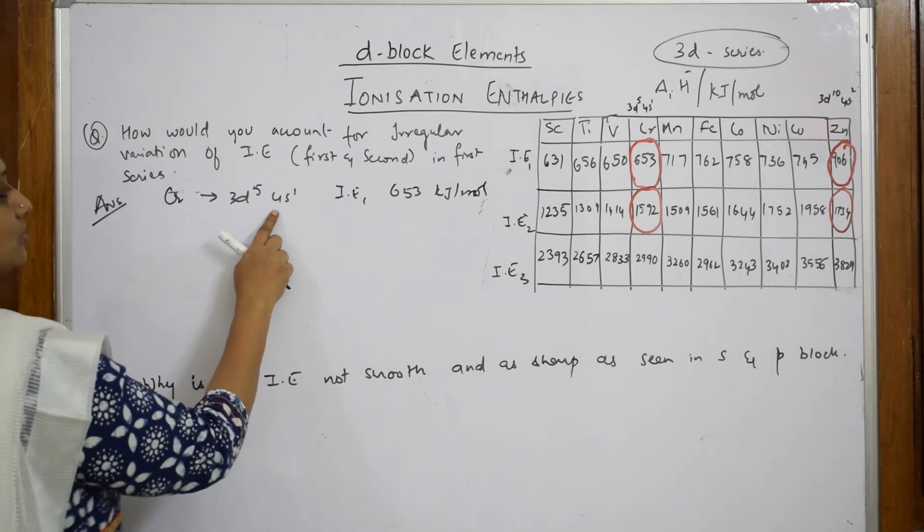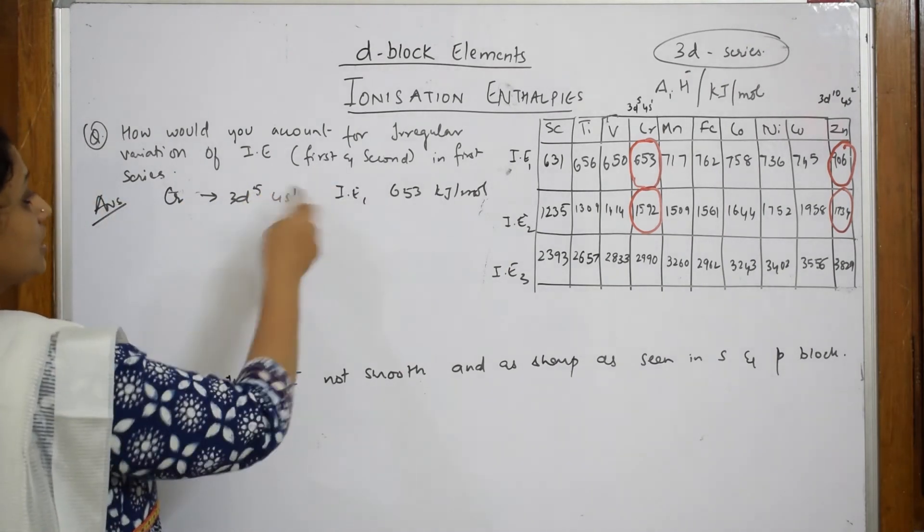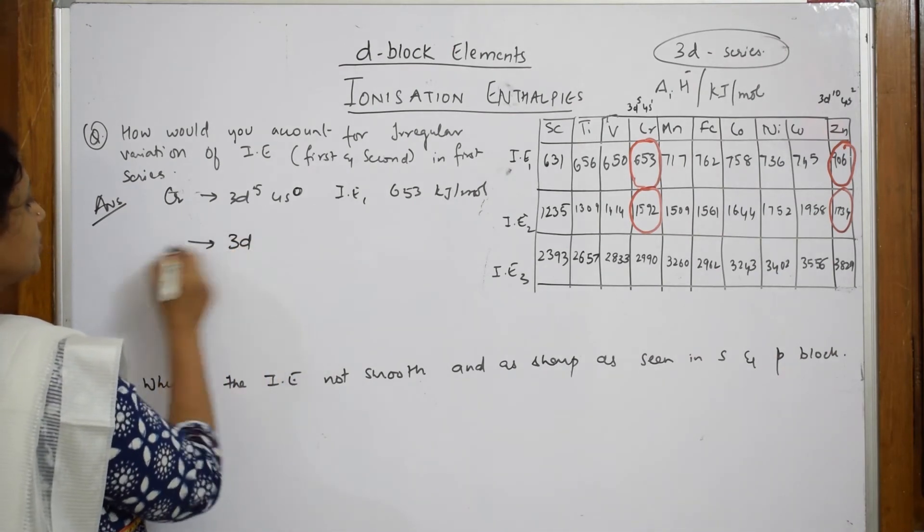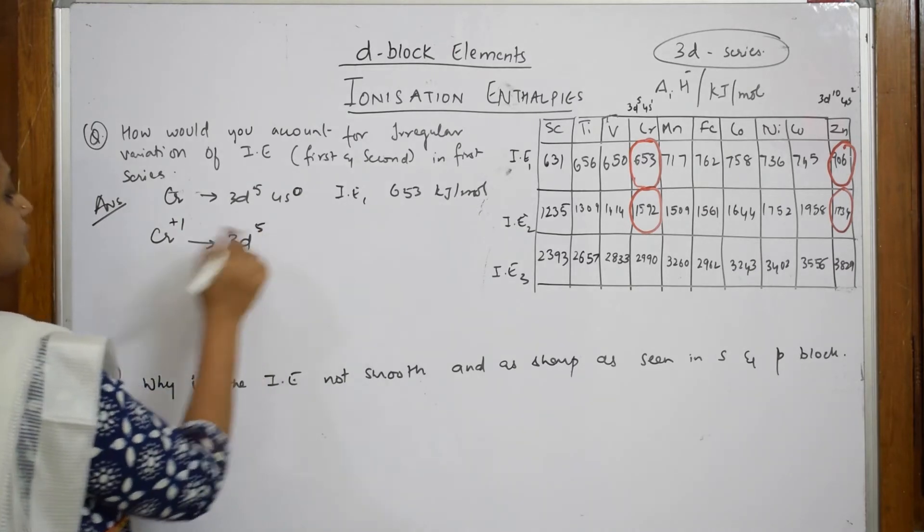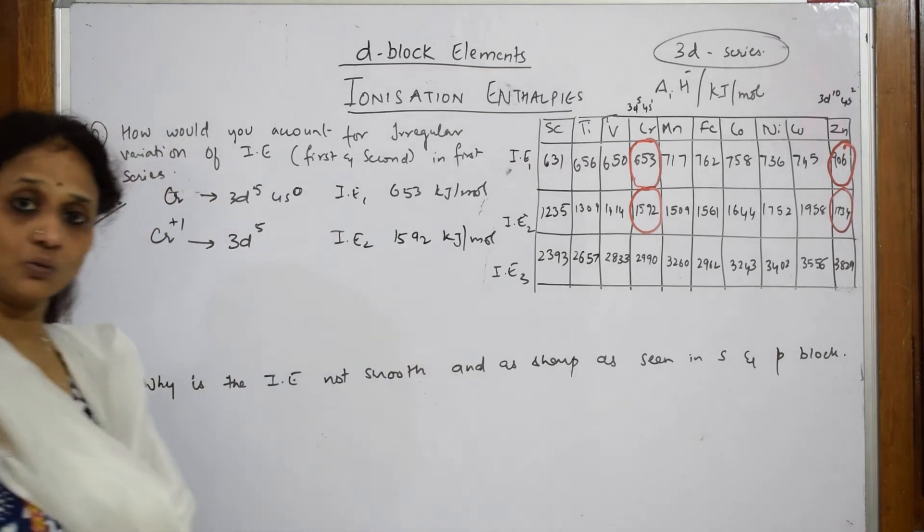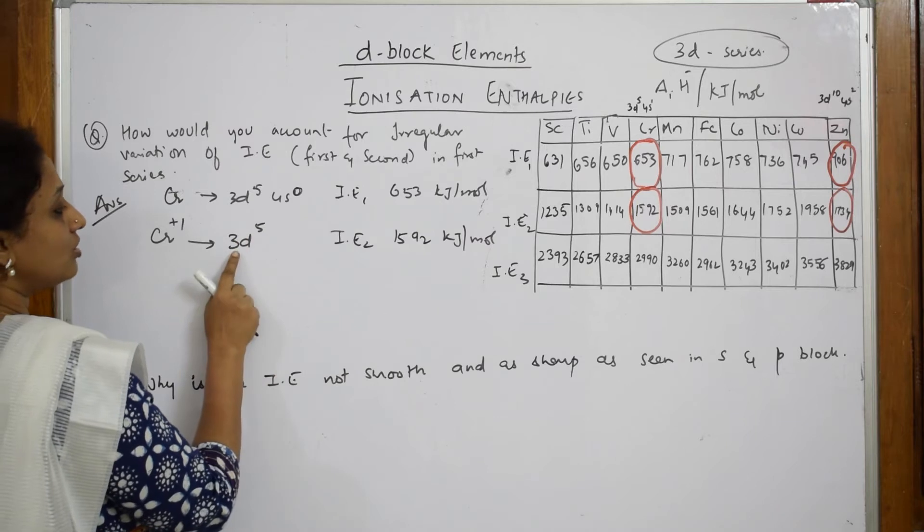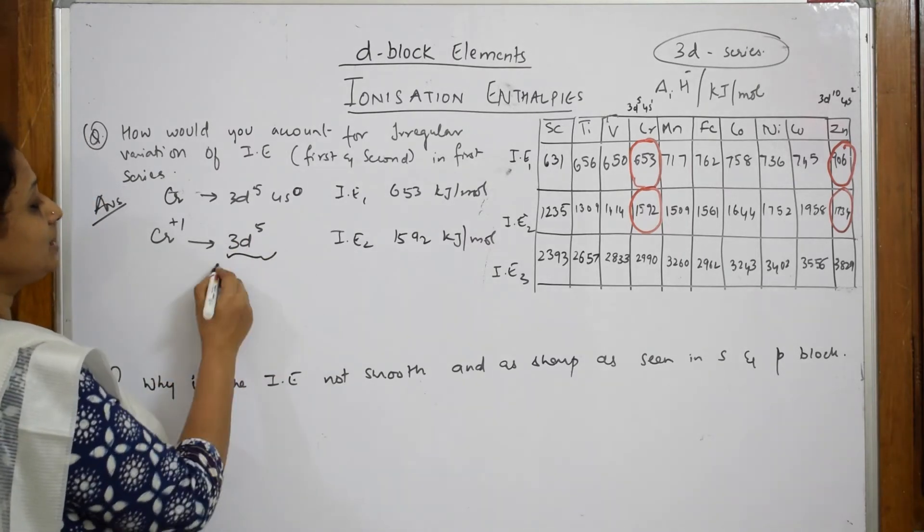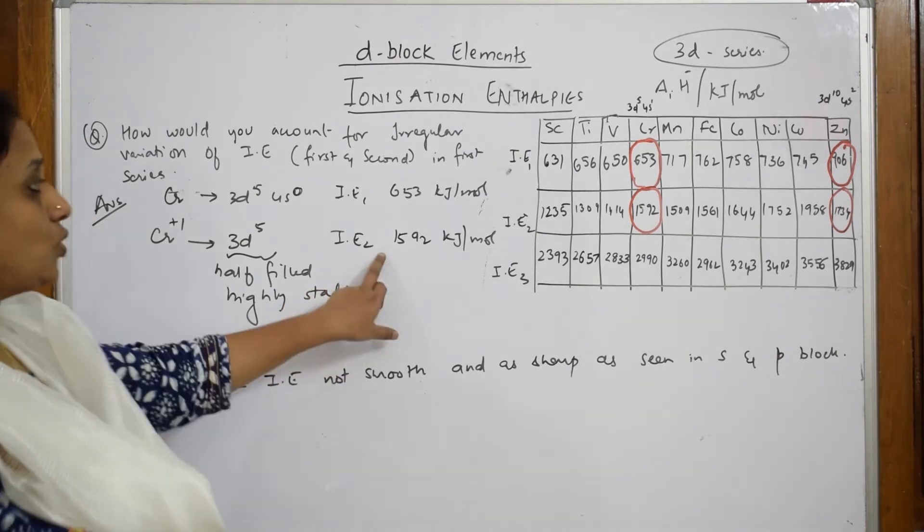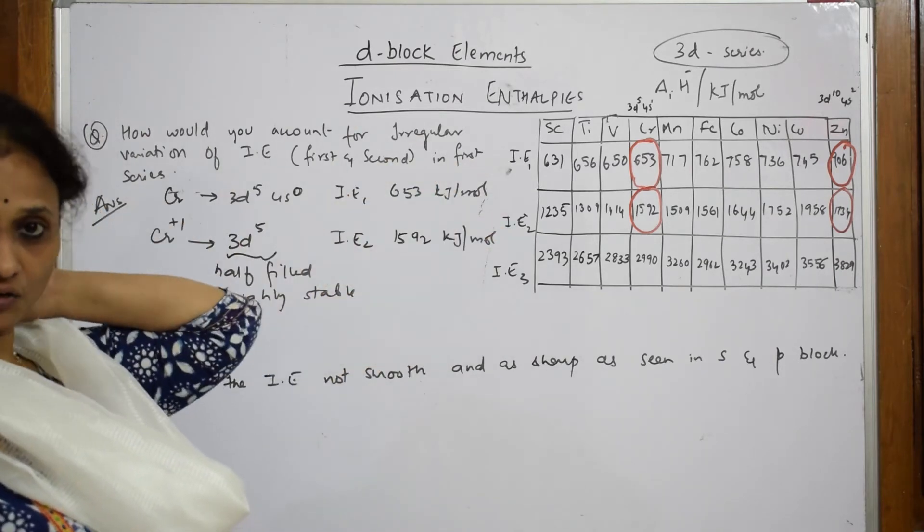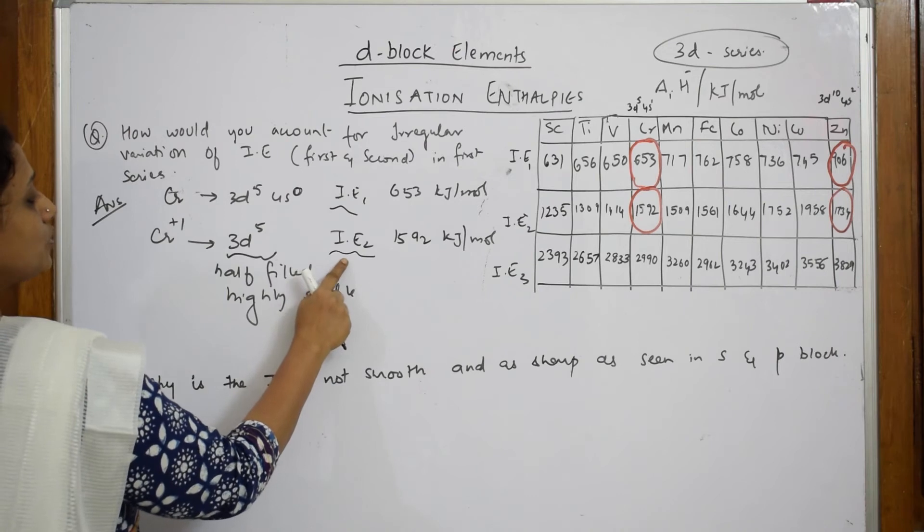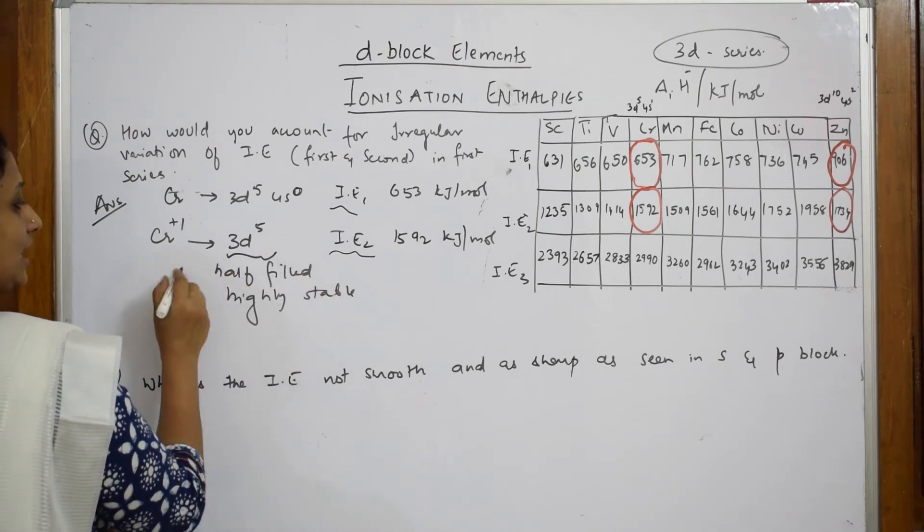Now, I have to take out one electron from this. You are going to take this electron out from the outer shell. Once this is done, first ionization enthalpy, this becomes zero. This becomes Cr plus 1. After taking out, I have to apply again energy IE2. That is how much? 1592 kilojoules per mole. Double. Why is it so much? Because I have to remove electron from the half-filled d-orbital. This half-filled is highly stable. That is the reason IE2 of chromium is very higher than IE1 of chromium.